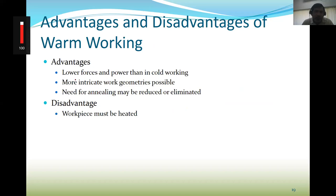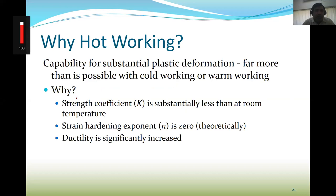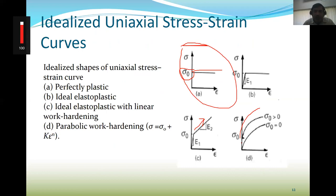Advantages of warm working include lower force and power than cold working, more intricate work geometry possible, and reduced need for annealing. Disadvantage is the work piece must be heated. Hot working involves deformation above recrystallization temperature — in practice close to 0.5 TM or above — and metal continues to soften as temperature increases. The advantage is very low stresses — strengthening coefficient K is substantially less than at room temperature, and theoretically the strain hardening exponent N is zero.